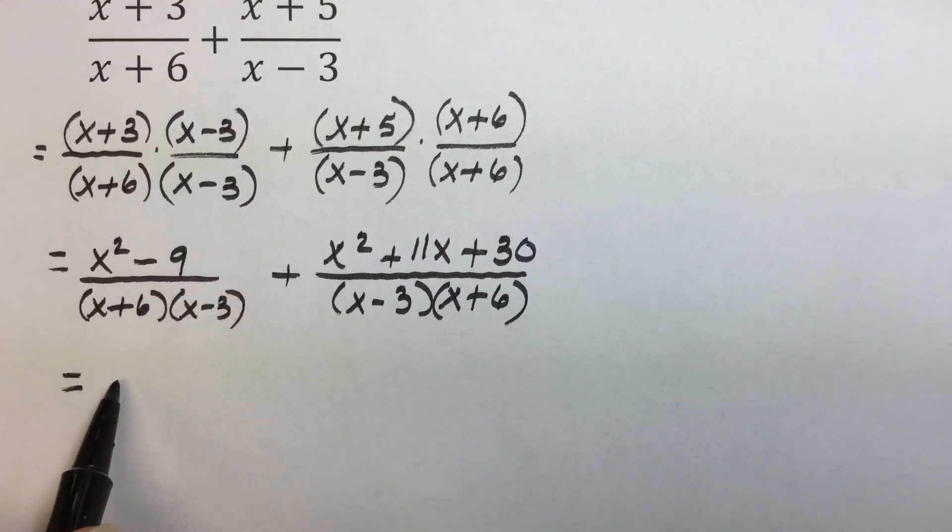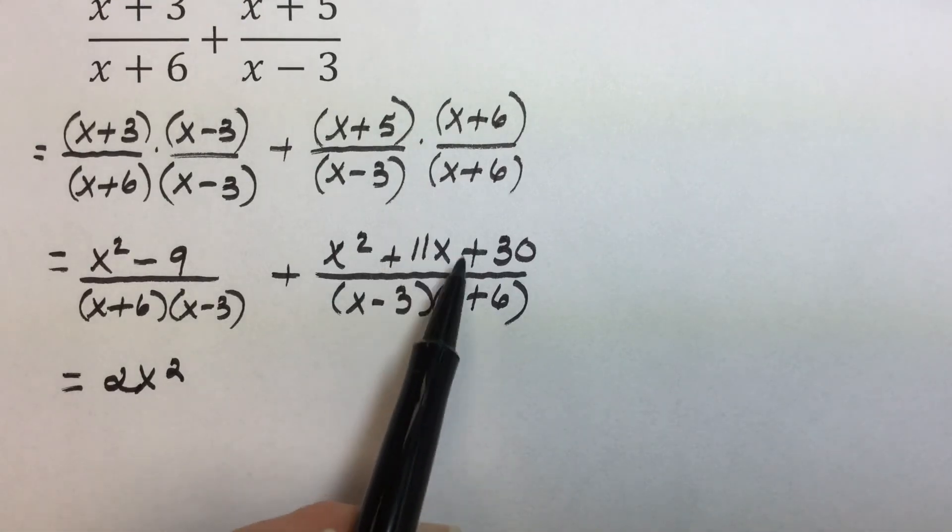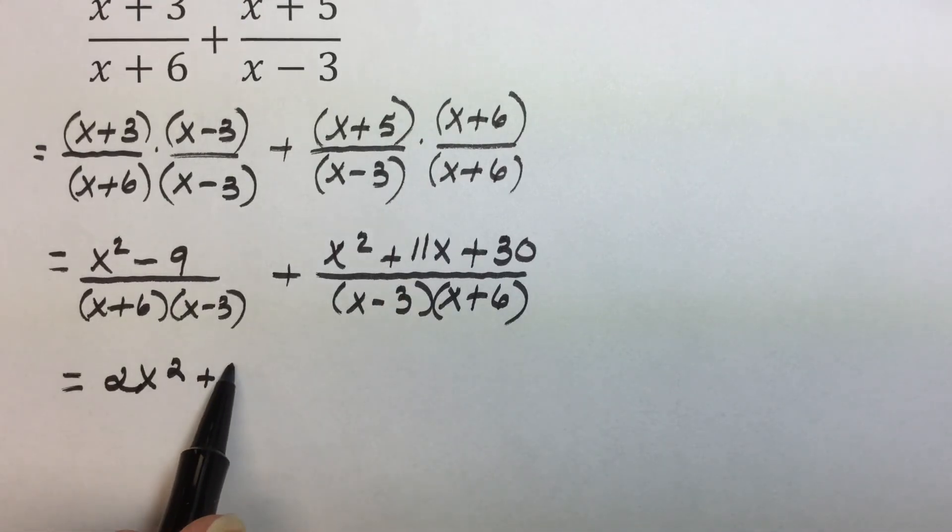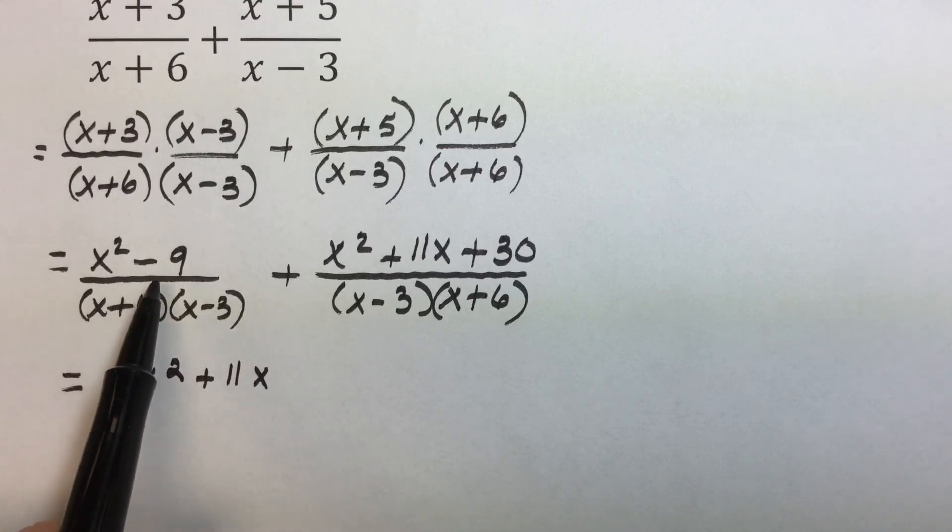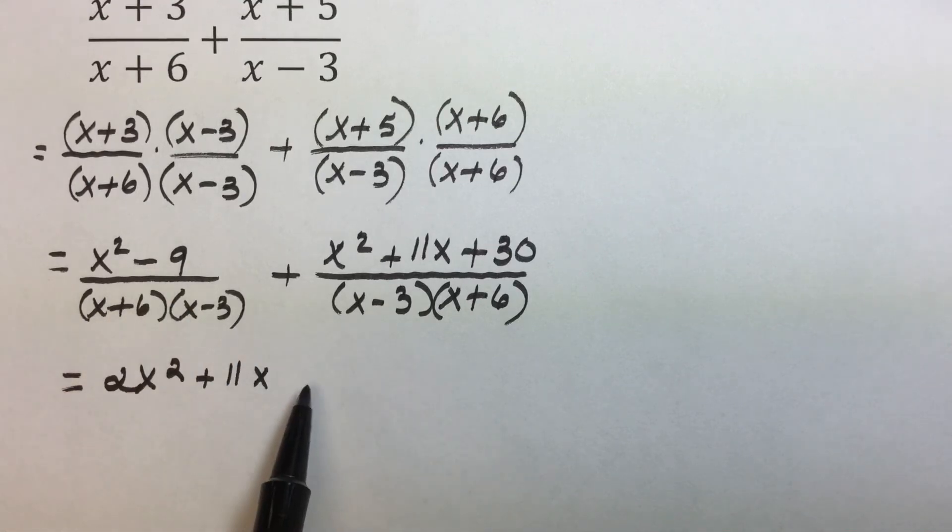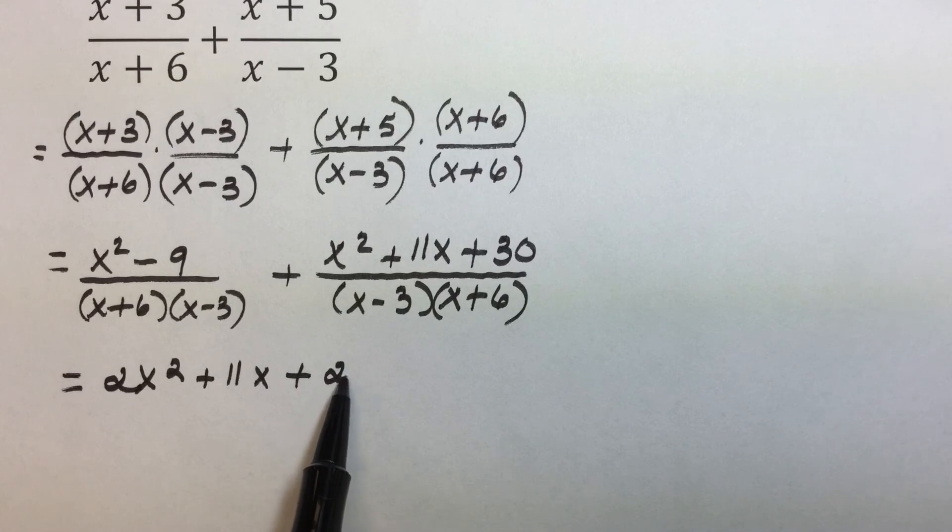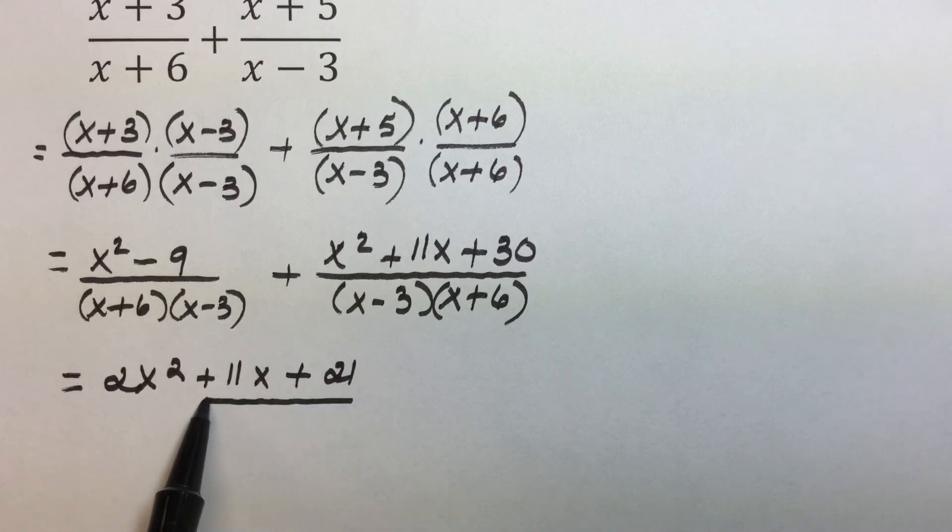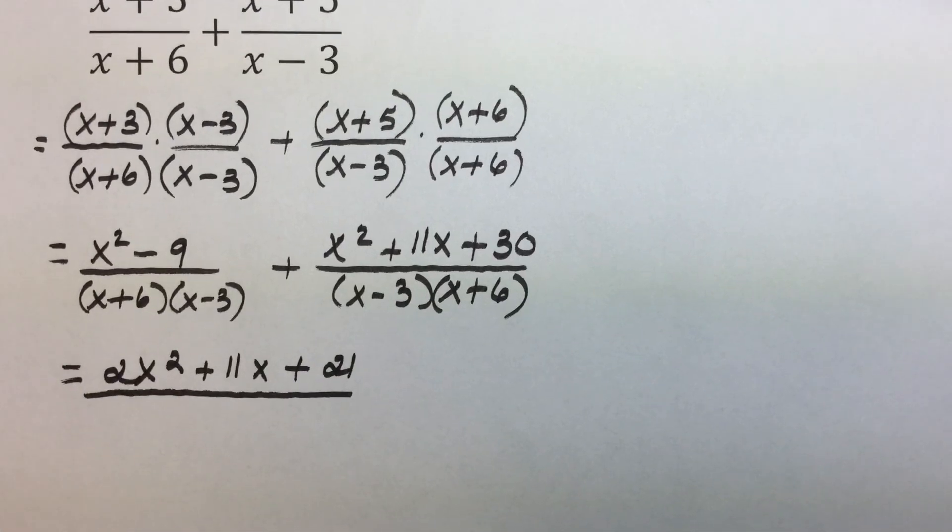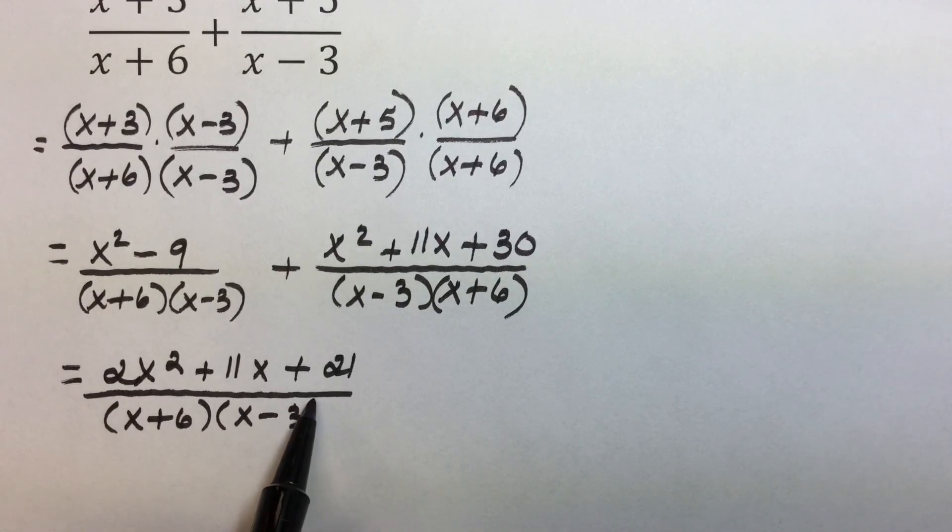X squared plus x squared, the like term, is a 2x squared. And if we put this in decreasing order, I'm going to put the linear term next. And last, constant terms, negative 9 plus 30 is a positive 21, all over that common denominator. And I am going to leave it in factored form for the next step where we need to consider whether our rational expression needs to be simplified.